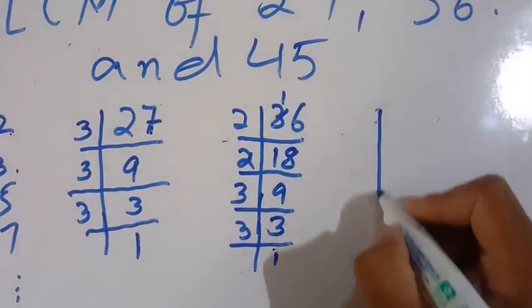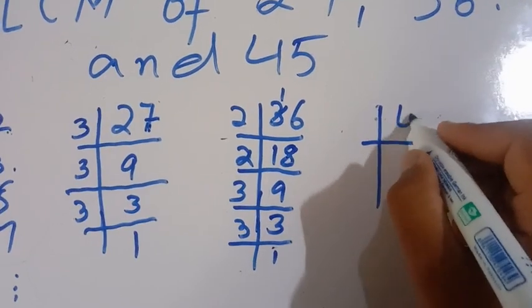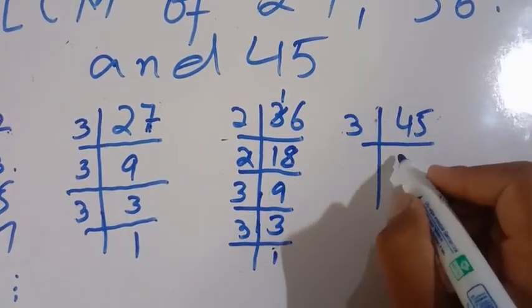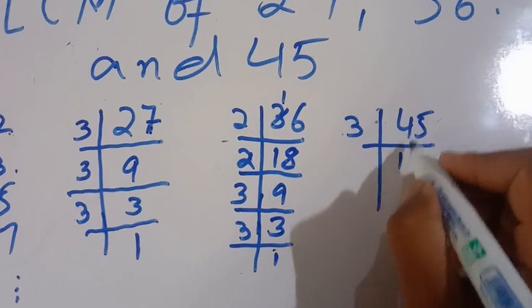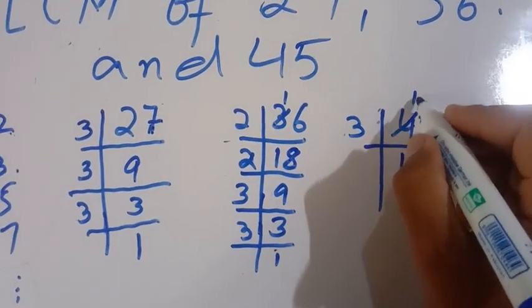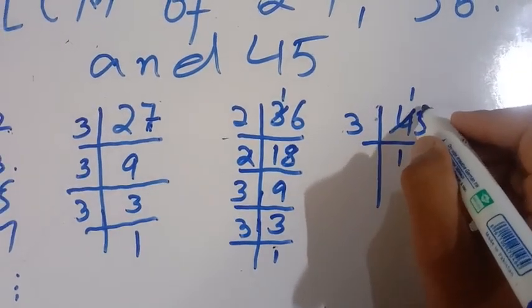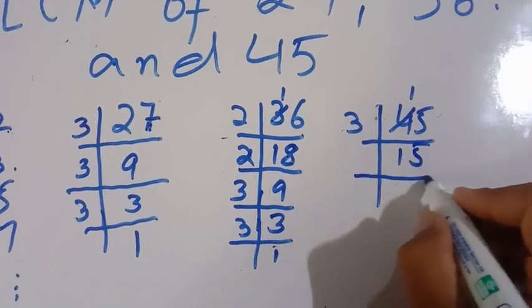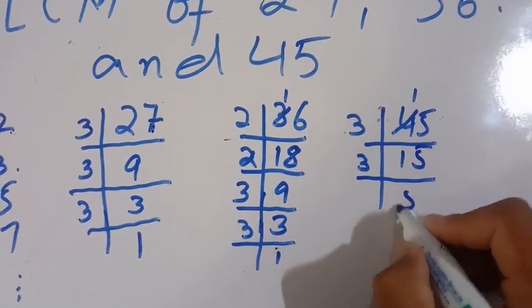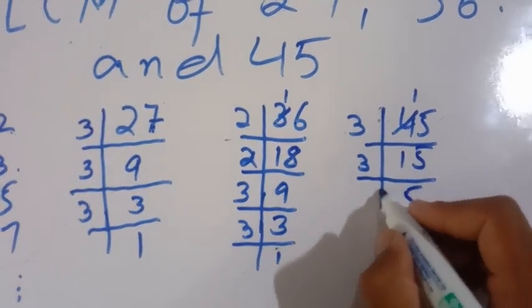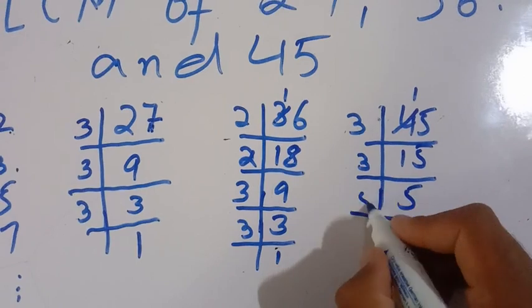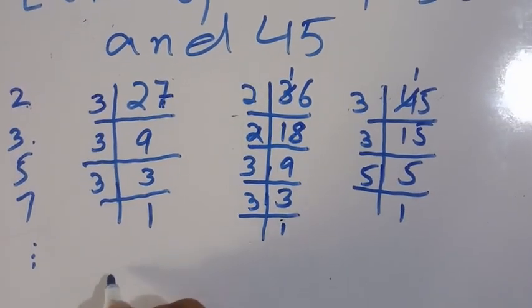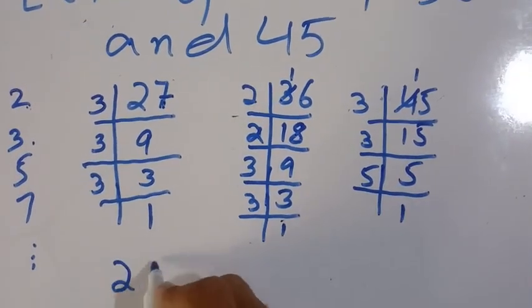Then we will find the prime factors of 45. 3 divides 45, giving 15. 3 divides 15, giving 5. So the prime factors of 45 are 3 × 3 × 5.